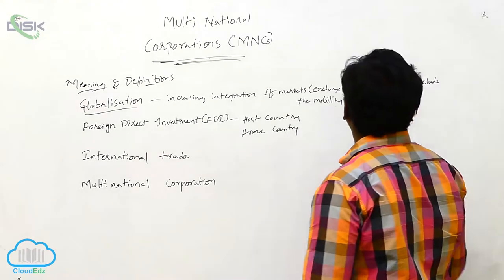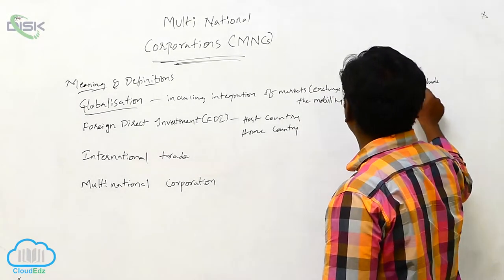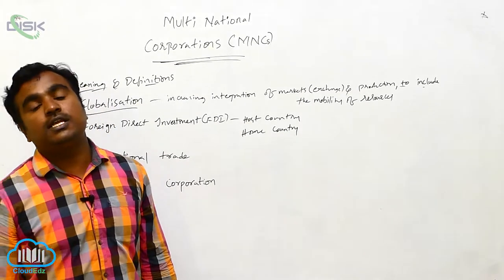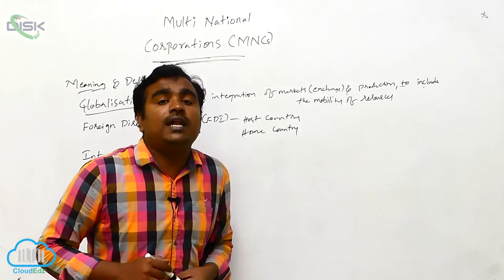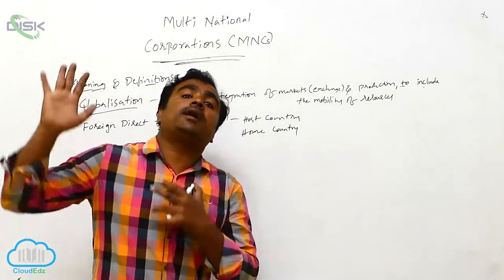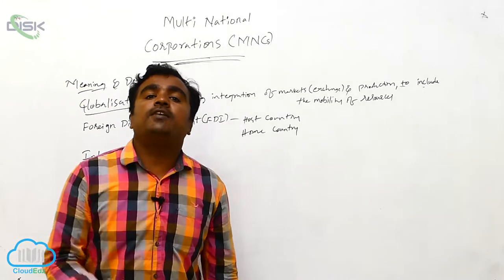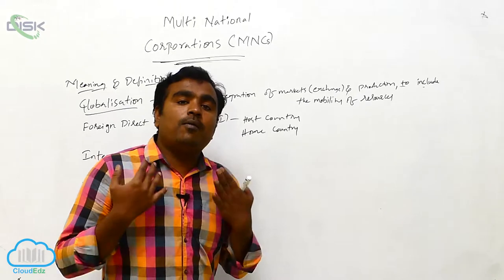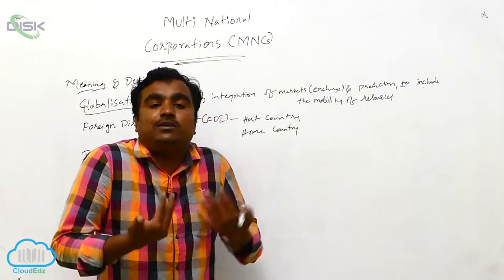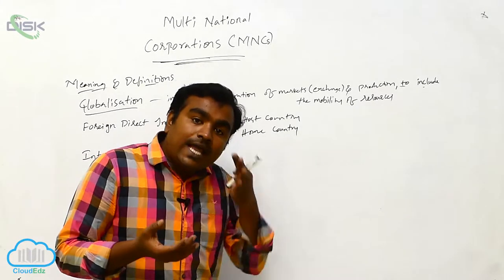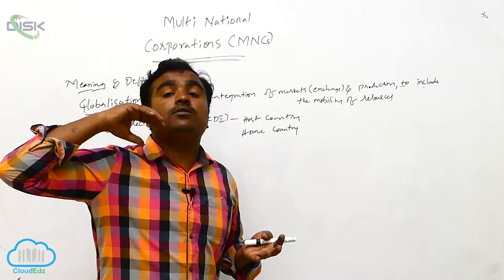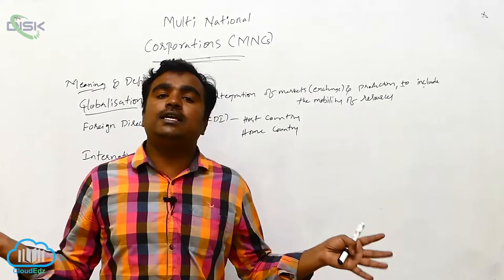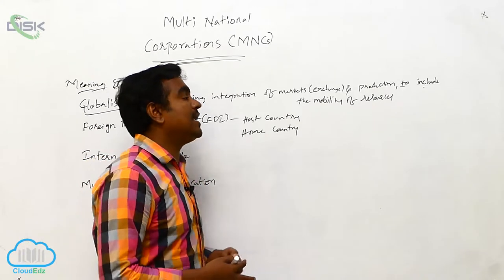Globalization means integration of markets and production. It is not only exchange of goods — it also includes the mobility of resources. So what I can't get here, I can mobilize those resources from other parts of markets. Mobility is one of the causes of globalization — it mobilizes what you don't have and brings it to our door. Globalization facilitates resources from other markets to our local market.